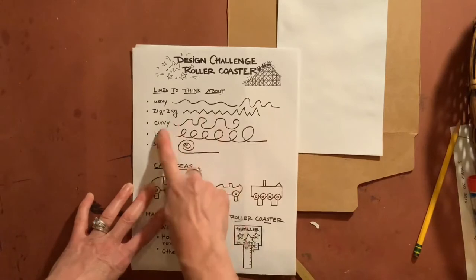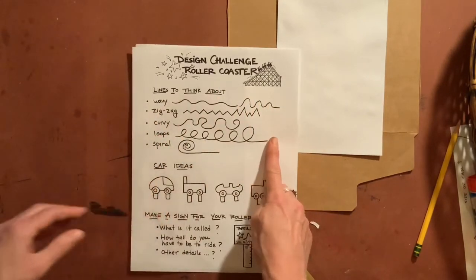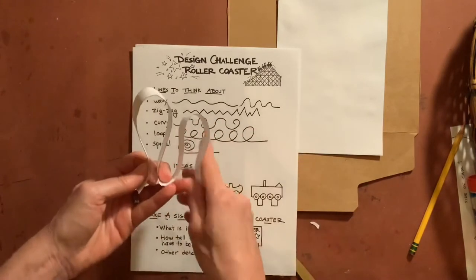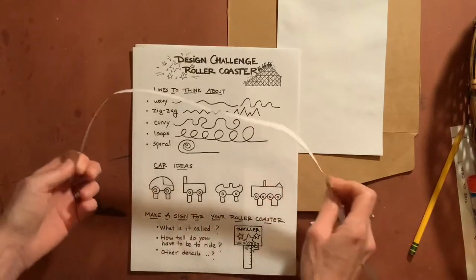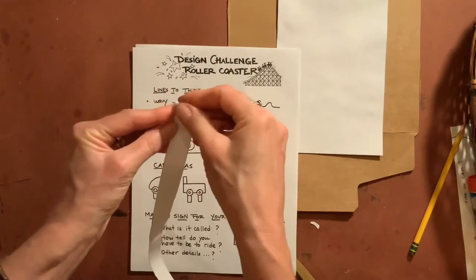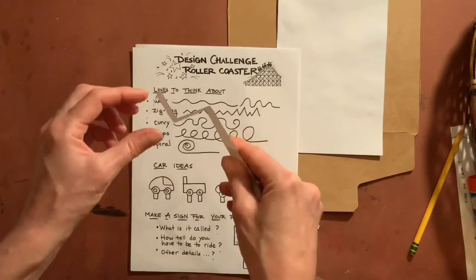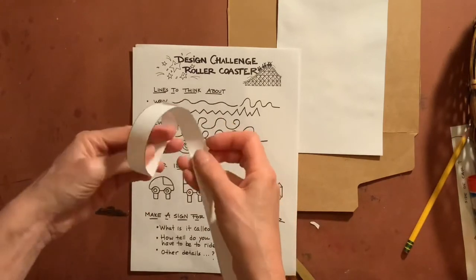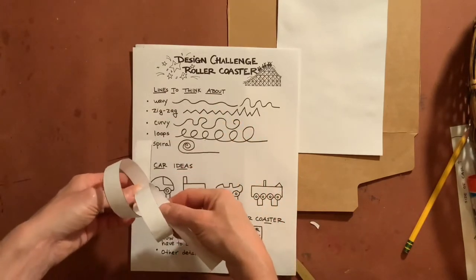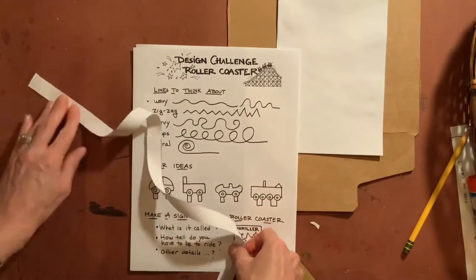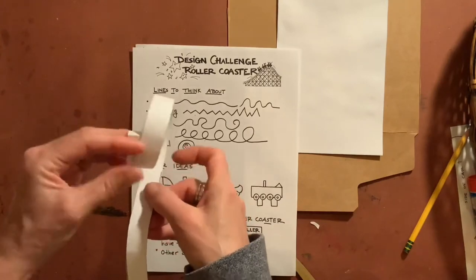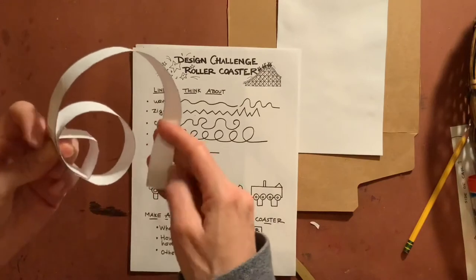We're going to think about two-dimensional lines we can use if we were drawing a roller coaster. It's different when we start to think about it in three dimensions. If it was a wavy line, we'd have our paper strip going up and down like this. If it was a zigzag, we'd be folding it forward and then backward. Loops are cool — we can loop our paper around and make loops. Curvy goes every which way. If we take a really long strip and kind of turn it around, a spiral goes around and around.